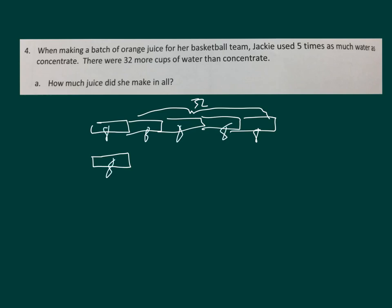How much juice did she make in all? So she combines each of those together for an all. And so the an all is 8, 1, 2, 3, 4, 5, 6, six eights. And that would help you figure out how much total juice that she made in all.